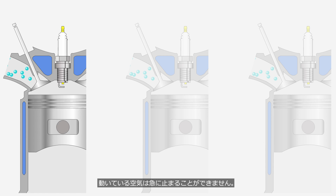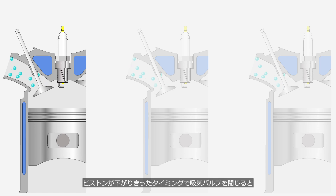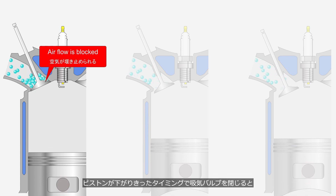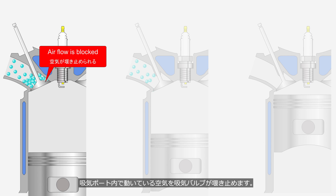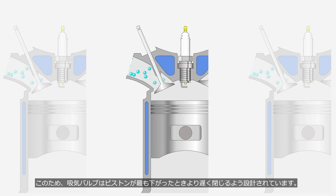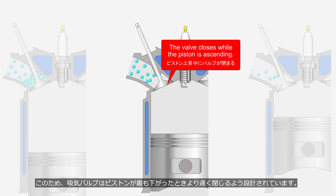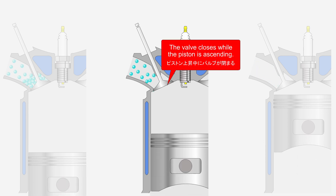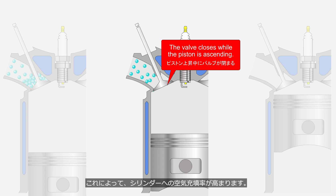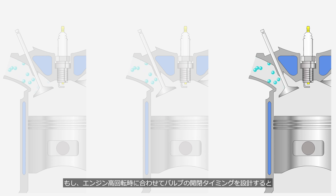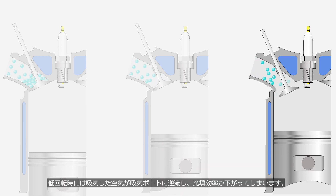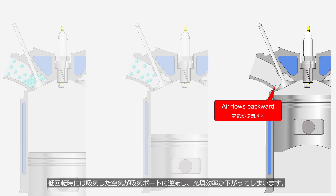If the intake valve closes when the piston is fully down, the intake valve will block the air moving within the intake port. Therefore, the intake valve is designed to close after the piston is at its lowest position. This increases the efficiency of the suction. If the valve timing is designed to match high engine speeds, the intake air will flow back into the intake port at low speeds, reducing the filling efficiency.